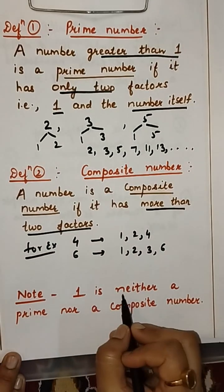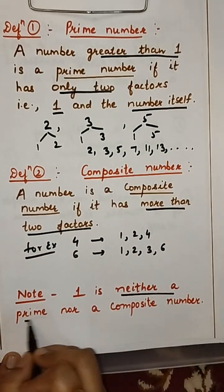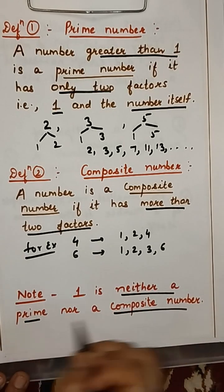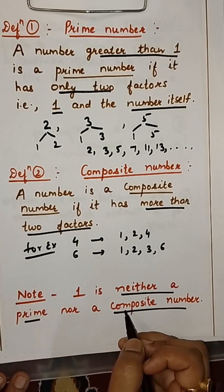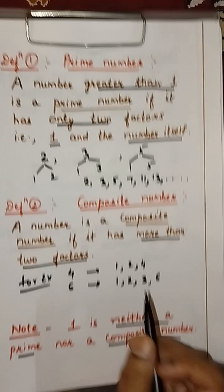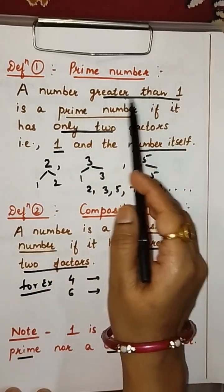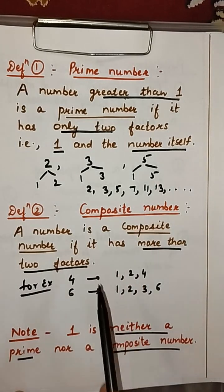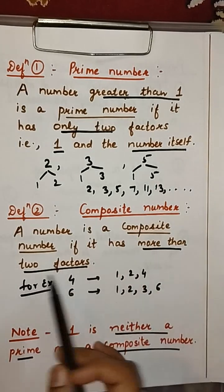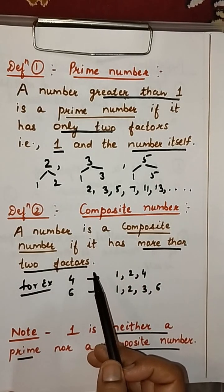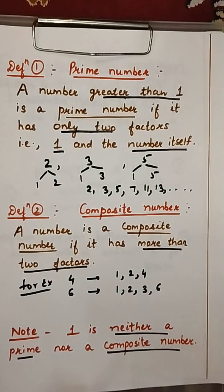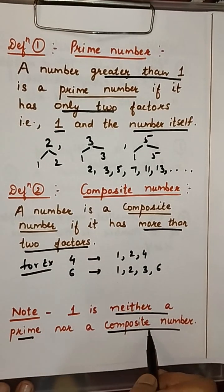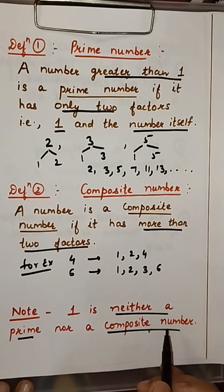We note that 1 is neither a prime nor a composite number. For prime numbers, the condition is a number greater than 1 having only 2 factors. For composite numbers, the condition is more than 2 factors. Since 1 has only one factor — itself — it is neither prime nor composite.